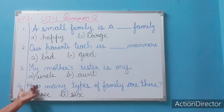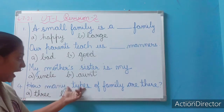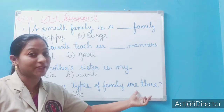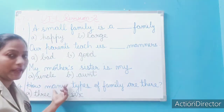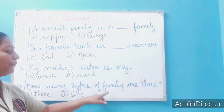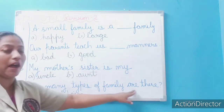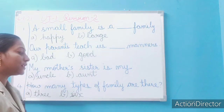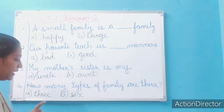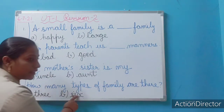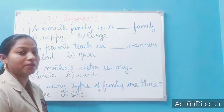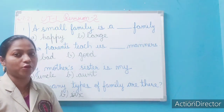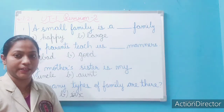Question 4: How many types of family are there? This is very simple — you know that. The options given are 3, 6, 5, or 2. Whichever is the correct answer, you have to tick it.